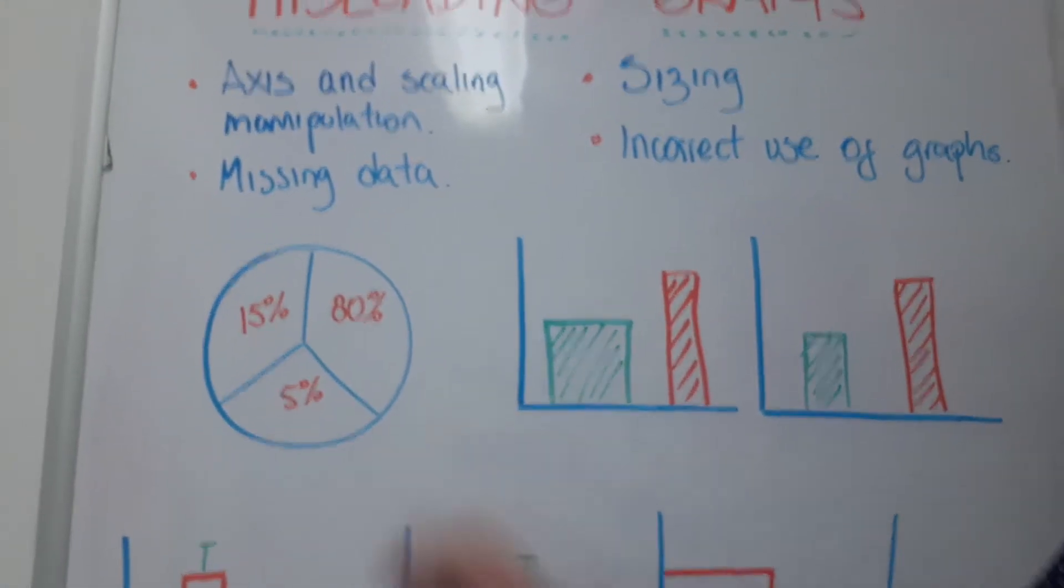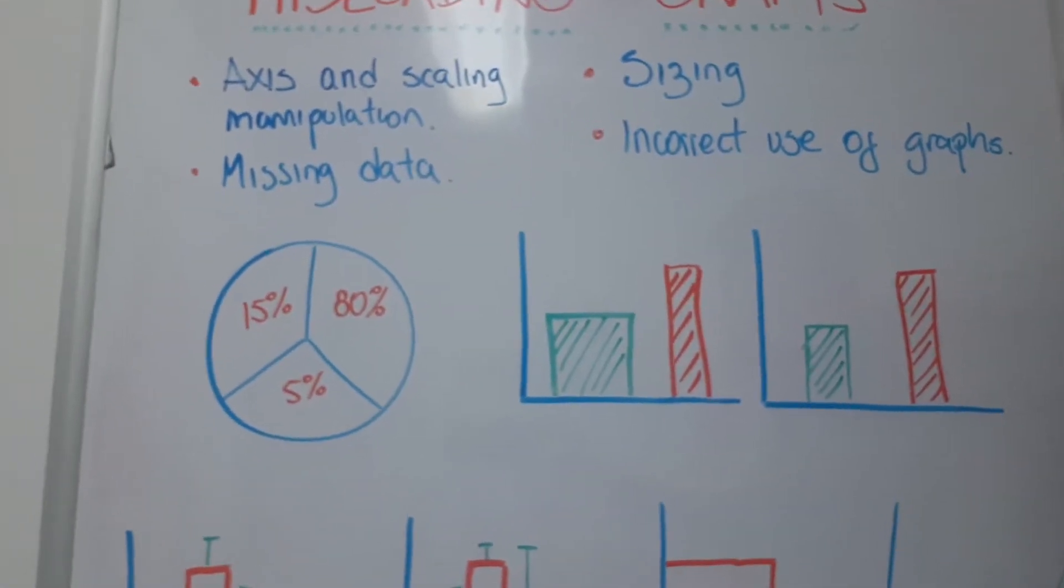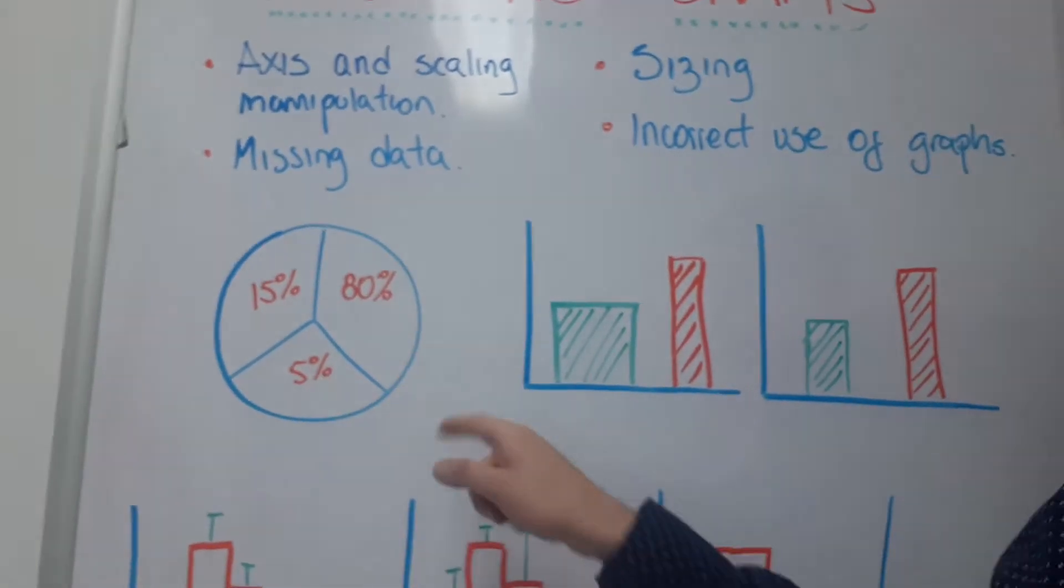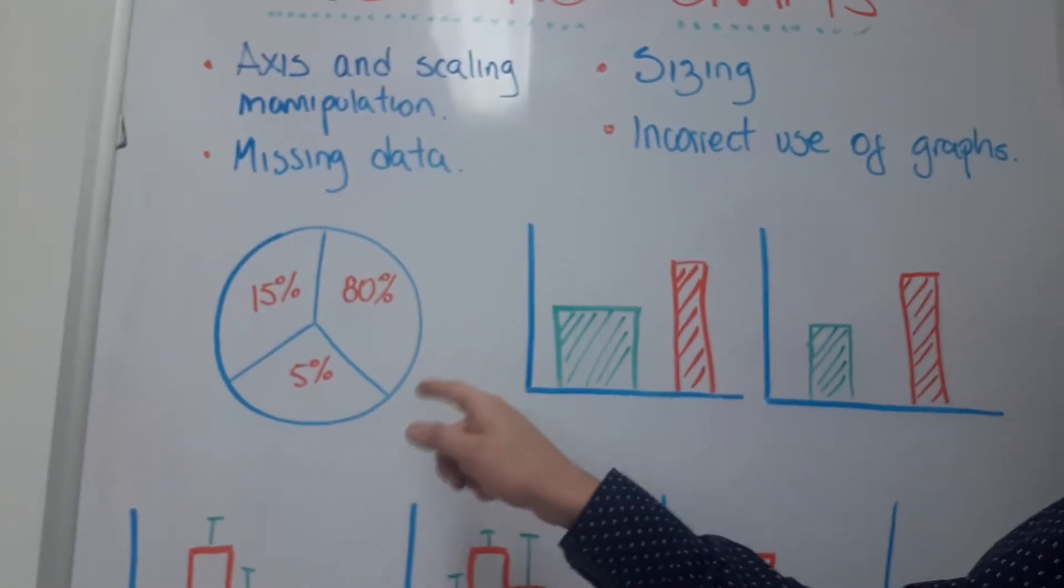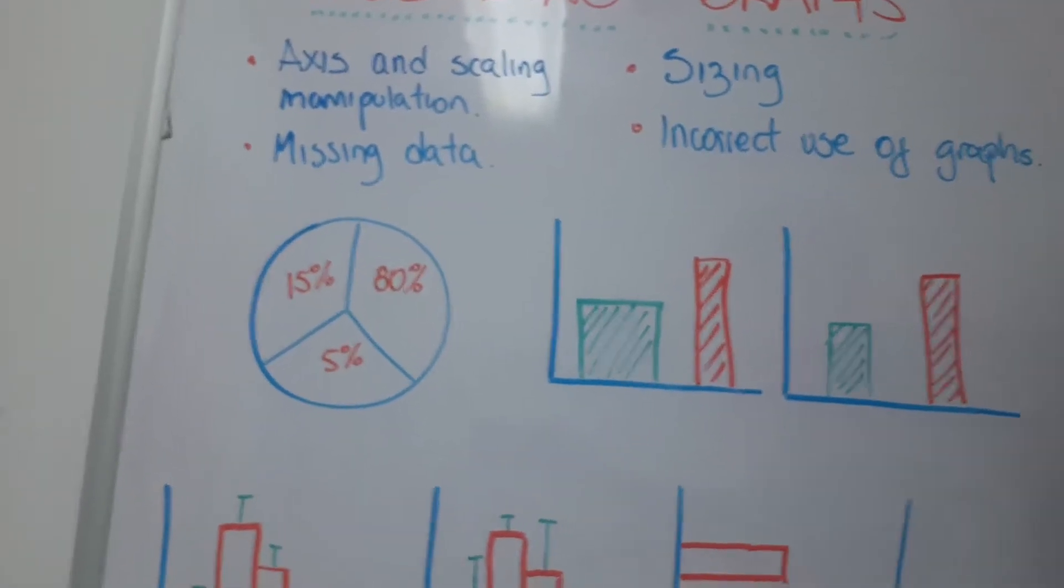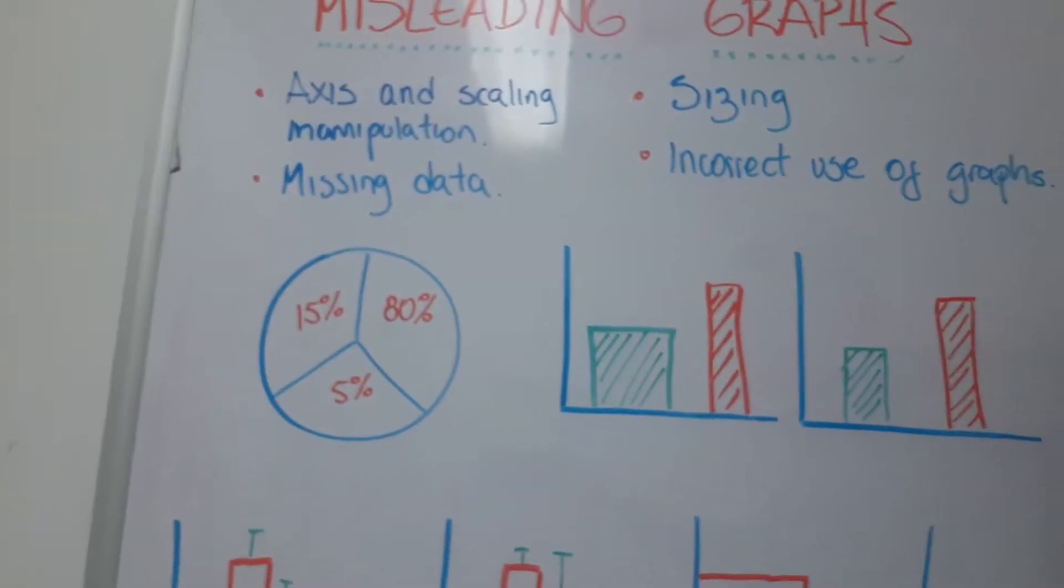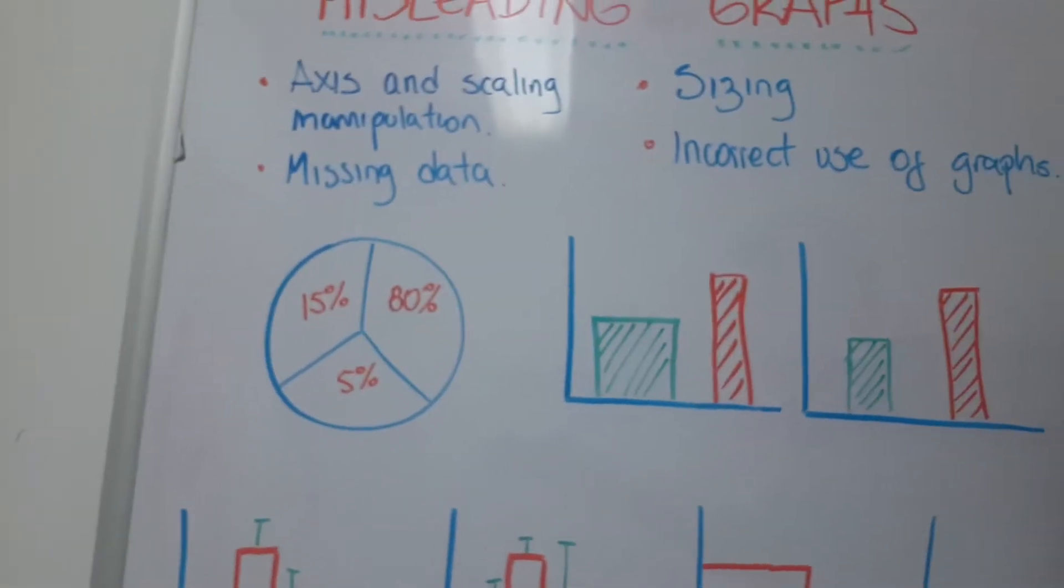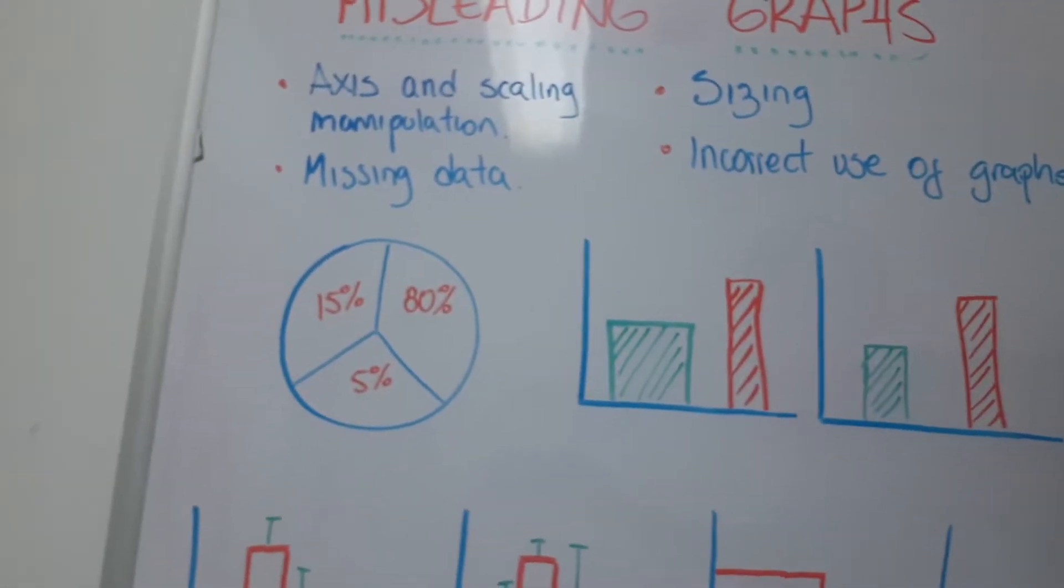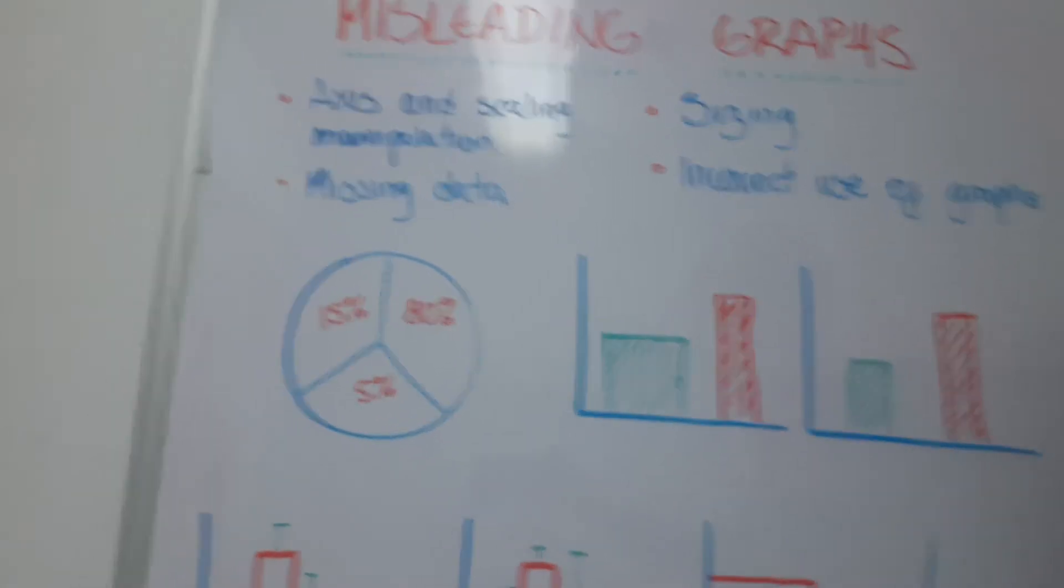Here we have the first one. As you can see, there are very different percentages in this graphic, but if you see the parts of this circle, they are almost equal even though the percentages are quite different. This is a very big percentage compared to the other two. So this is one manner to manipulate a graph.